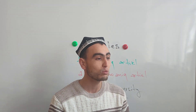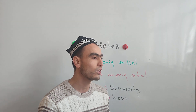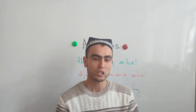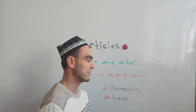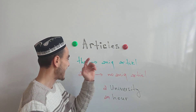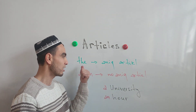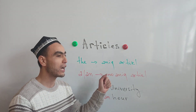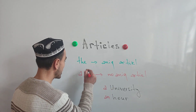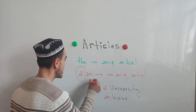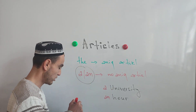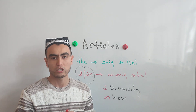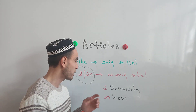An article is a word placed before a noun. In English, articles are of two types: the definite article and the indefinite article. Today I will give some information about the indefinite article 'a/an'.